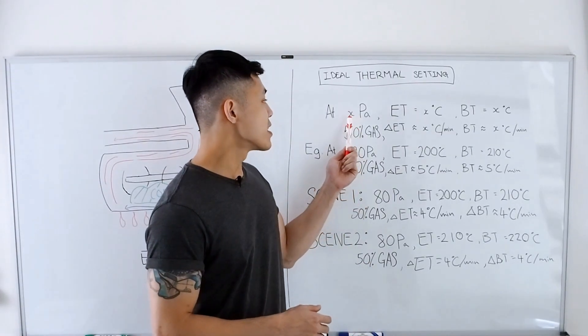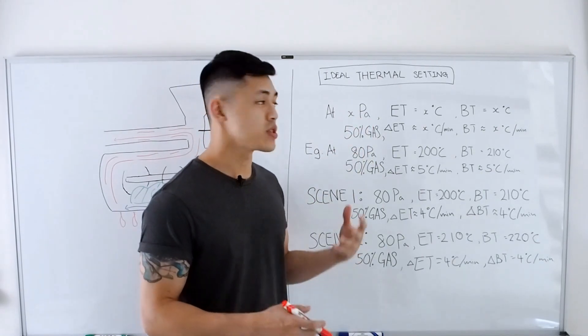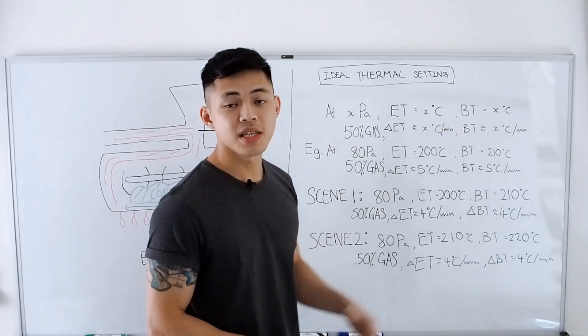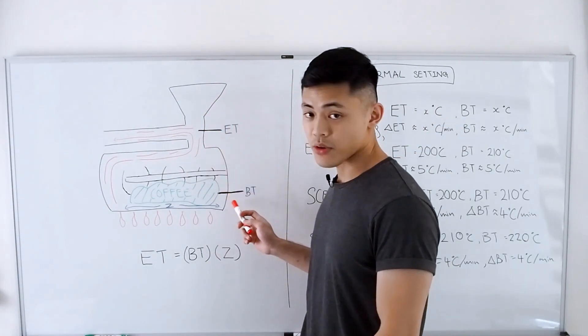The first variable is the negative pressure in the roasting machine, which is usually measured in pascals, followed by the ET and the BT, which is the temperature measured by these two probes.